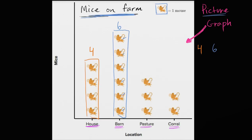What about the pasture? Well, we see that there's three mice there, just because each of these pictures is one mouse. The person who made the picture graph could have made each of those pictures a different number of mice. But here, each one is one mouse. So there's three in the pasture. Three in the pasture.